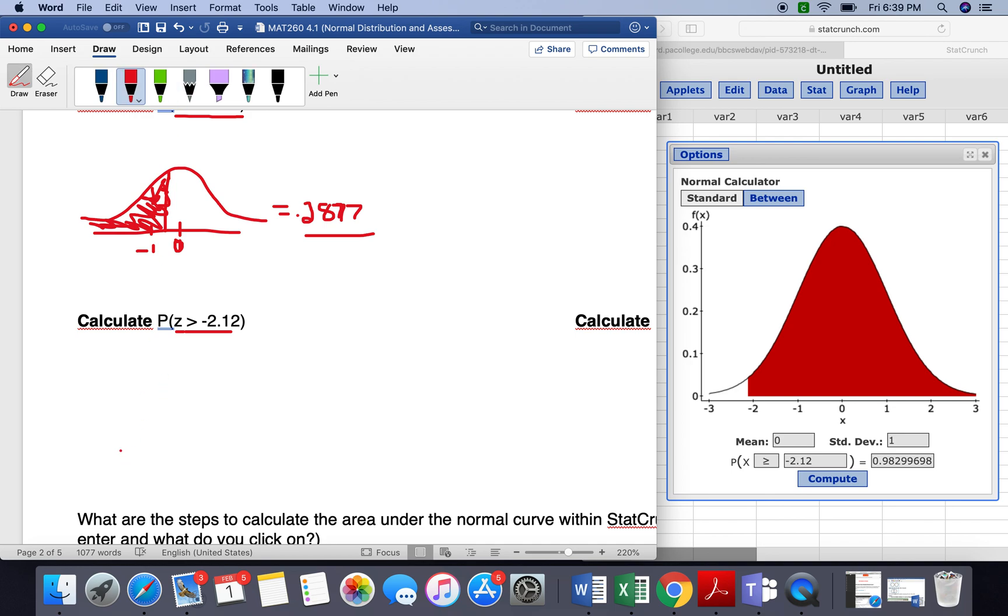So drawing this out, we have 0, negative 1, negative 2, and what we want to shade in is everything to the right.